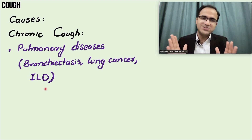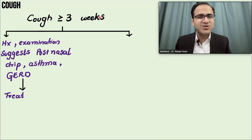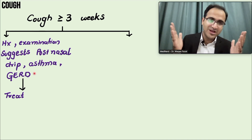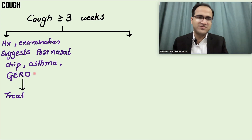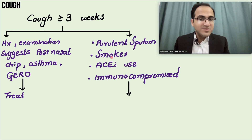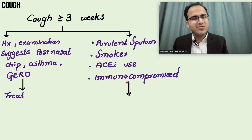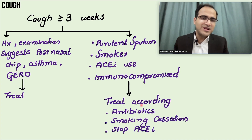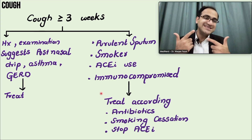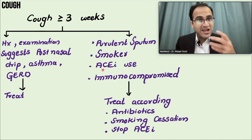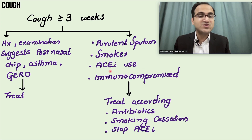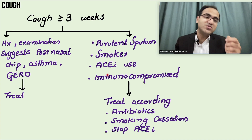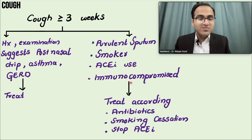When a patient presents with cough lasting three weeks or more, take history and examination. If there is post-nasal drip, asthma, or GERD, treat empirically — response to therapy confirms the diagnosis. If there is purulent sputum, perform a chest X-ray and give antibiotics. For smokers, advise smoking cessation. For patients on ACE inhibitors, switch to an angiotensin receptor blocker like valsartan. For immunocompromised patients, screen for tuberculosis.